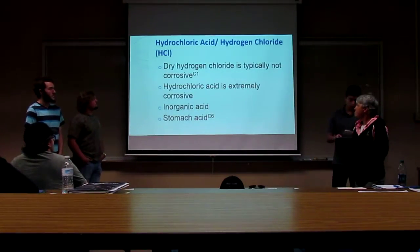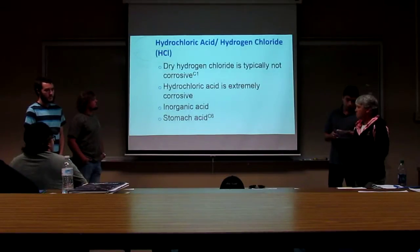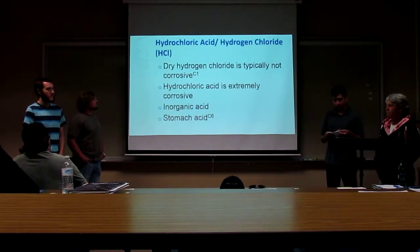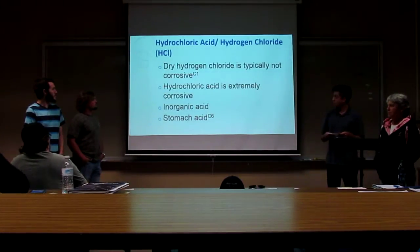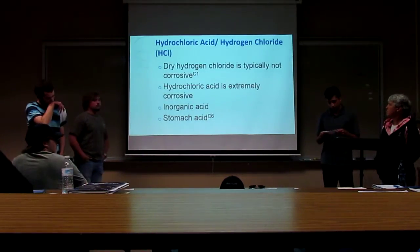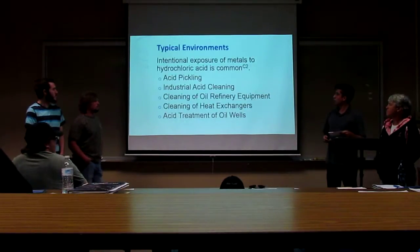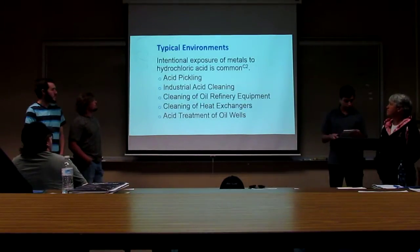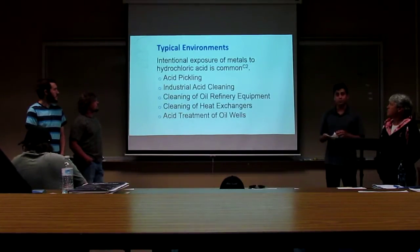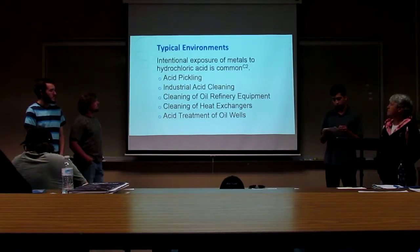Hydrochloric acid, when in an aqueous state, is an extremely corrosive inorganic acid that deteriorates a wide variety of metals. It is one of the types of acid that the human body uses to break down food. Hydrochloric acid deteriorates metals in a number of different ways. When the acid reacts with a metal, hydrogen and chloride are produced. And if the metal retains the chloride, it will lead to severe stress corrosion cracking.